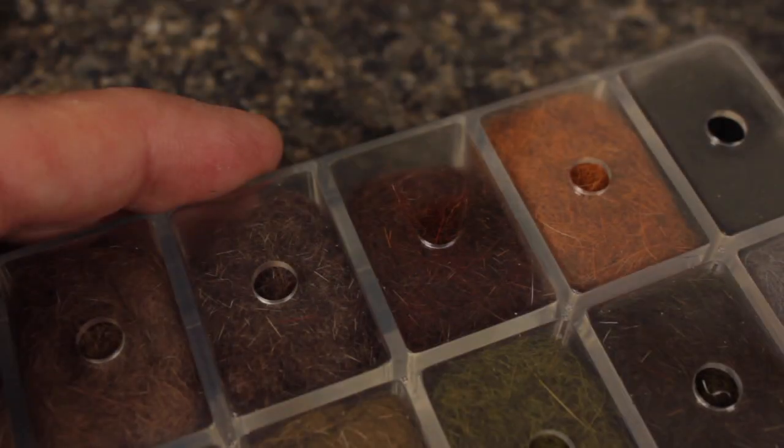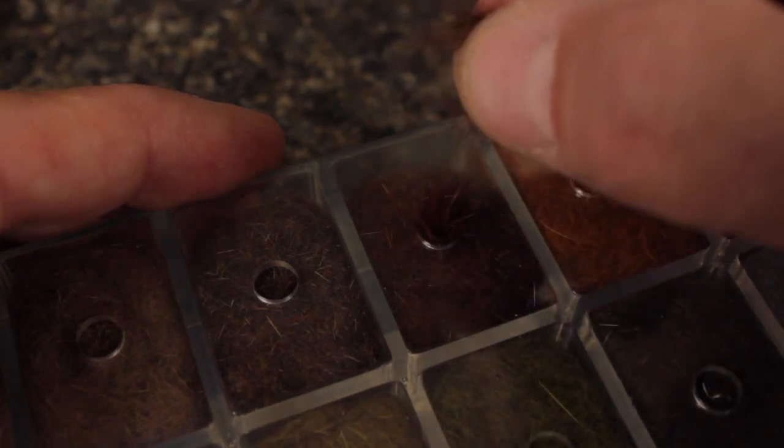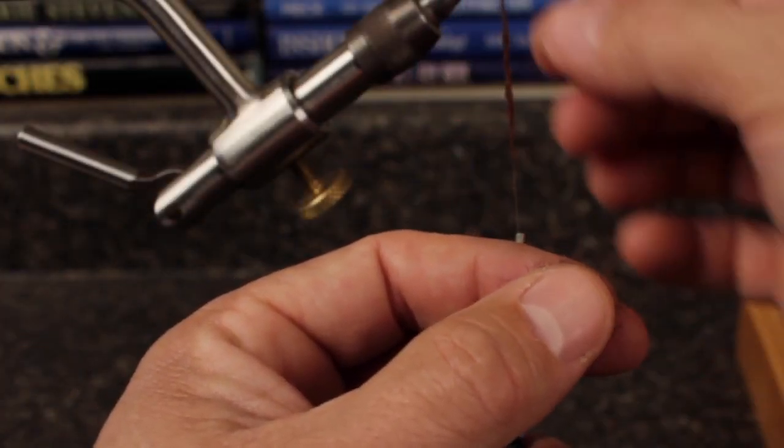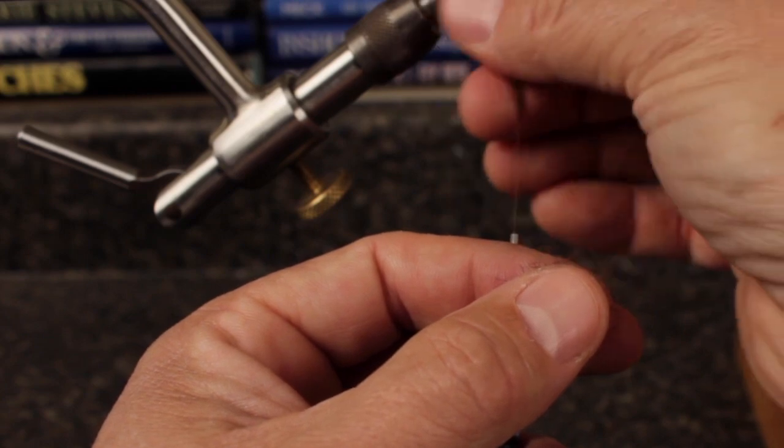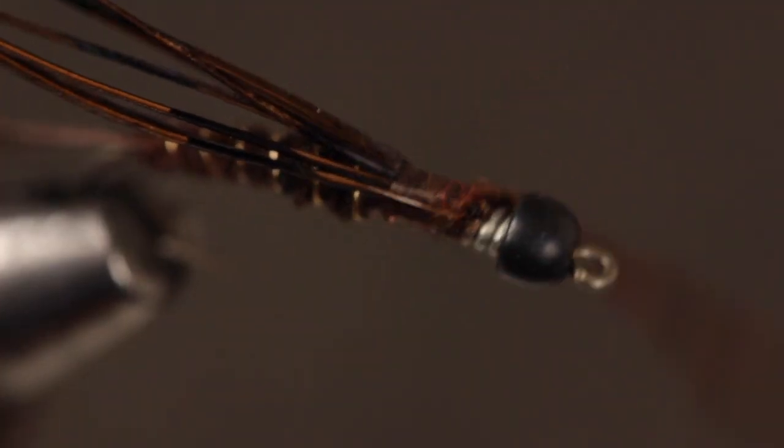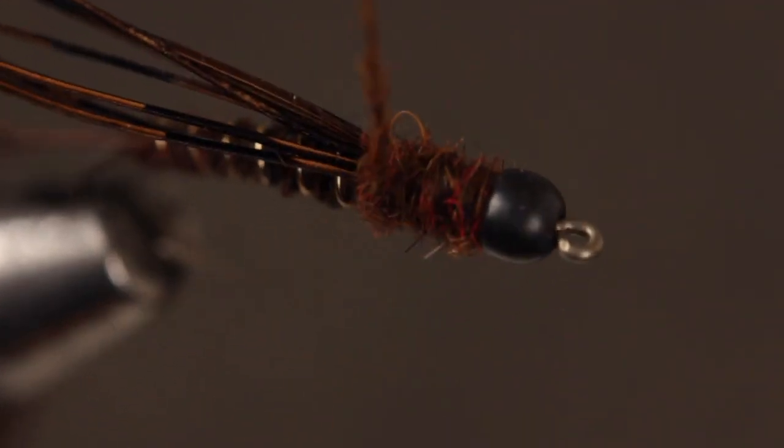For the thorax I'm using a custom dubbing blend of rabbit and hare's ear that's a dark maroon in color. A variety of dubbing materials will work here as long as it includes some spiky guard hairs that can be roughed out to look like legs. Wrap the dubbing noodle to build up an ample thorax and end with bare thread just behind the bead.